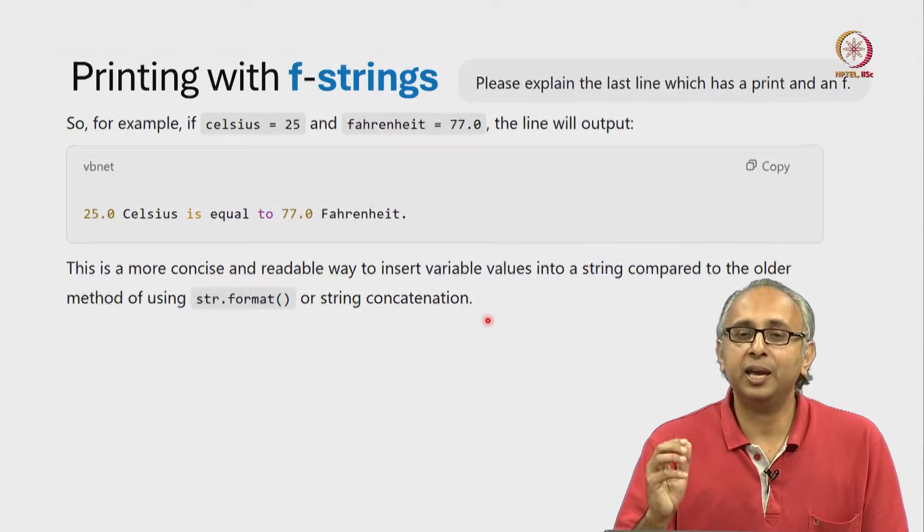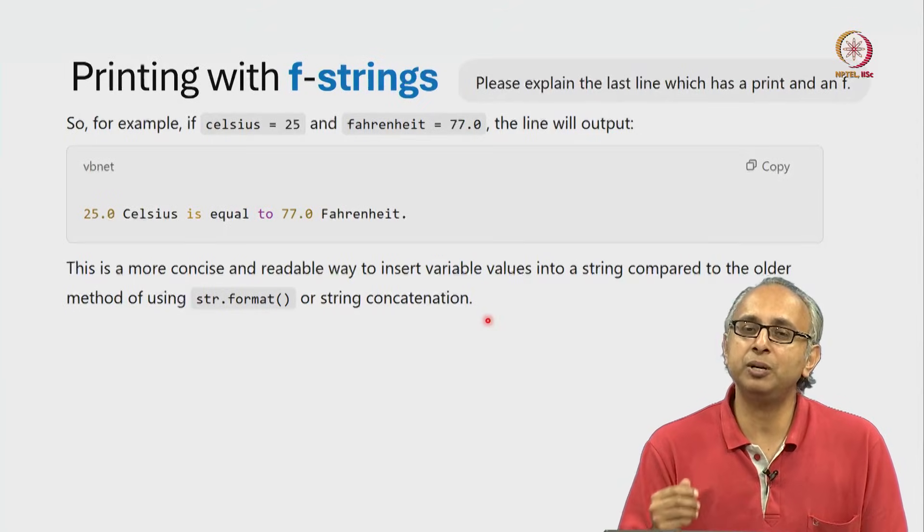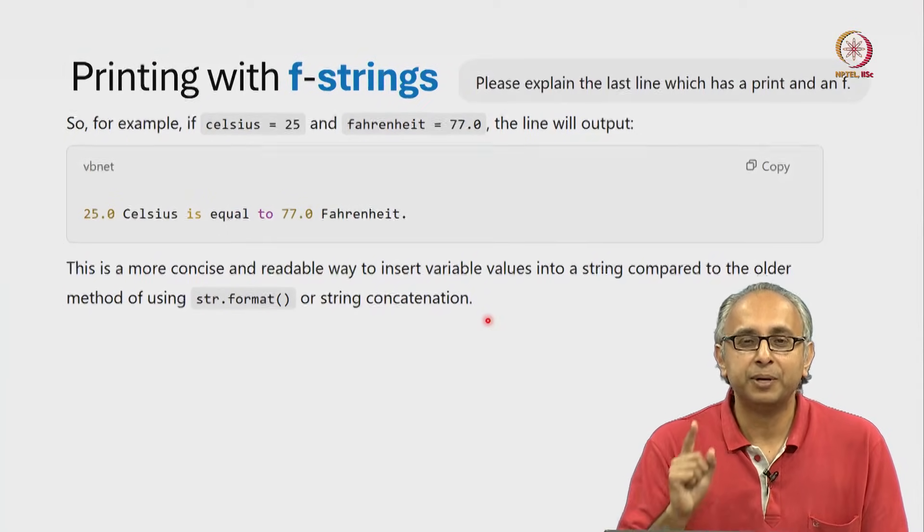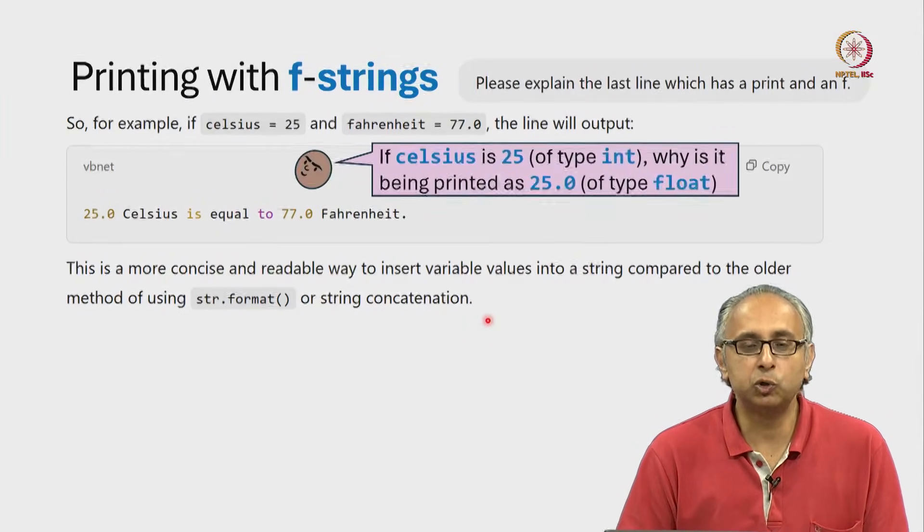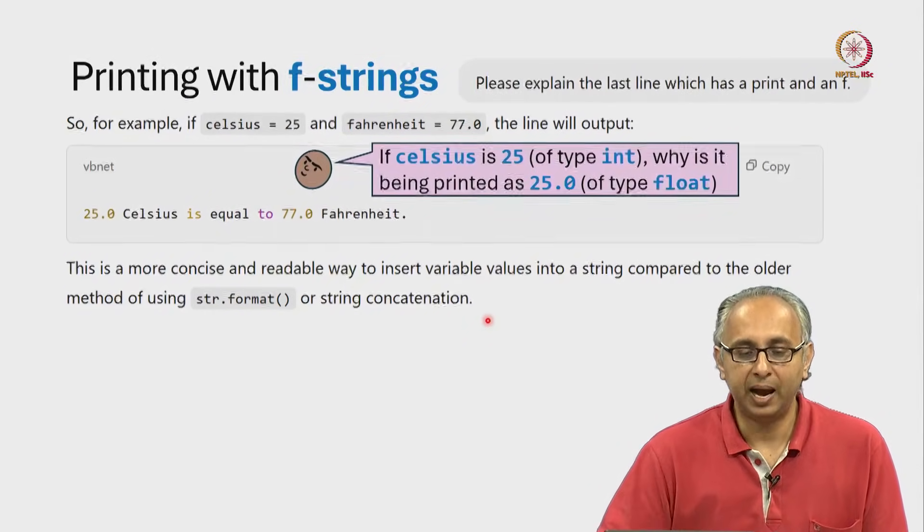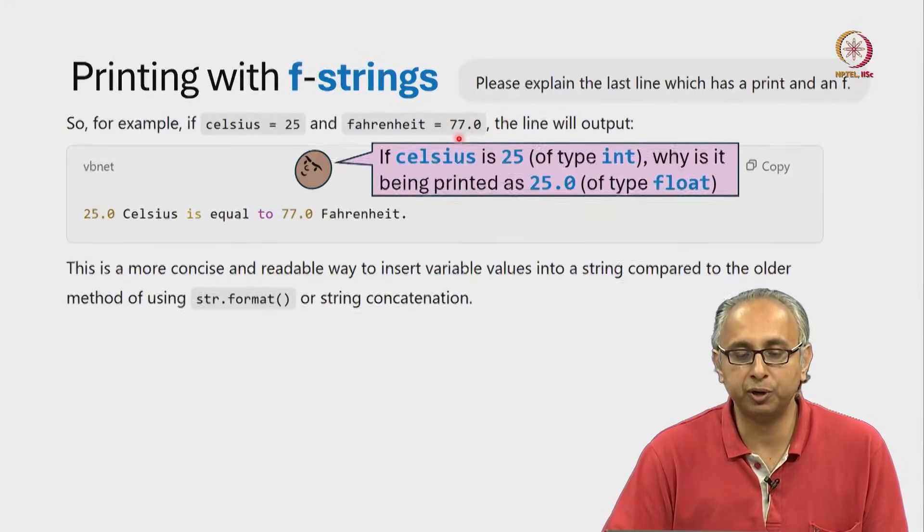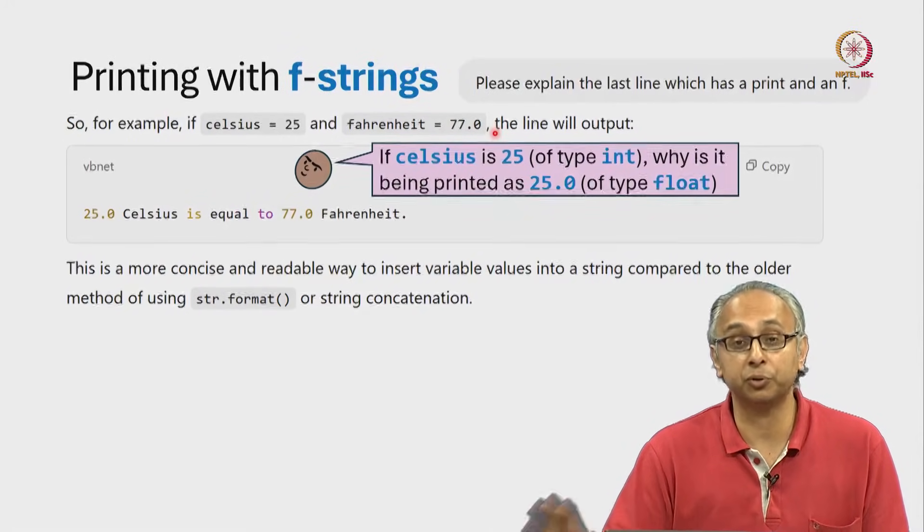Now, this AI generated explanation is extremely useful but our friend wants to make an important point. Our friend looks at this explanation and says, wait a minute. I can see that Fahrenheit you have written with a dot zero. So, Fahrenheit is a float.